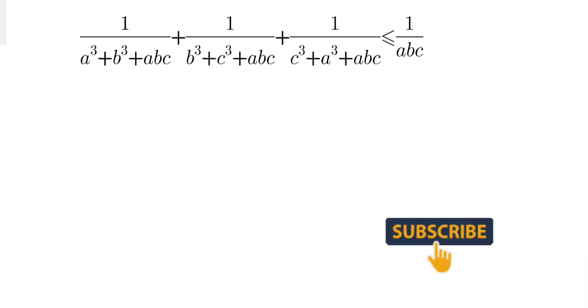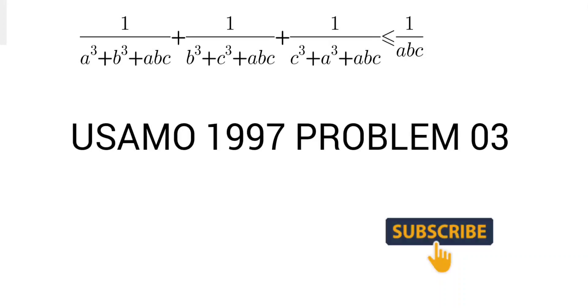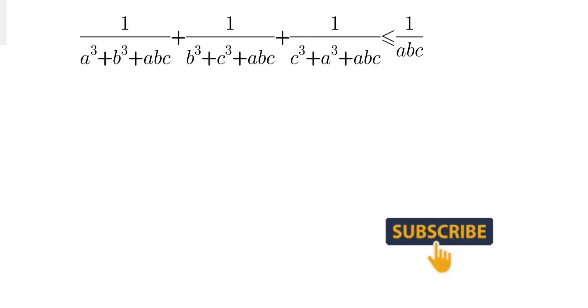Hello everyone, today we are going to solve this USAMO US Math Olympiad question from 1997, problem number three, where we have to prove this inequality where a, b, and c are positive. If you want to try it, pause the video and try, otherwise keep watching. So let's start.